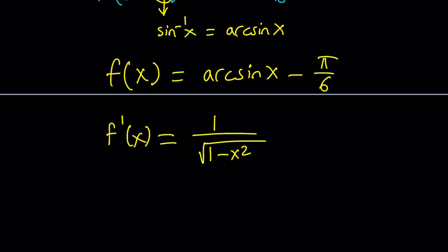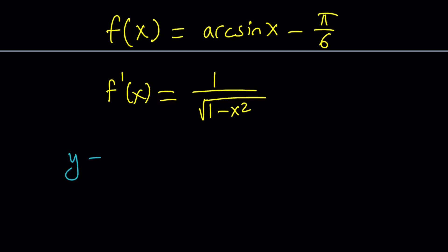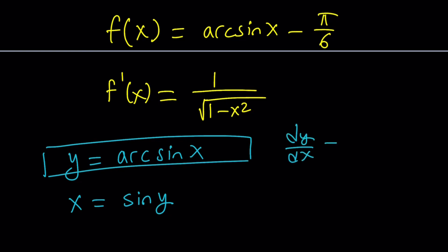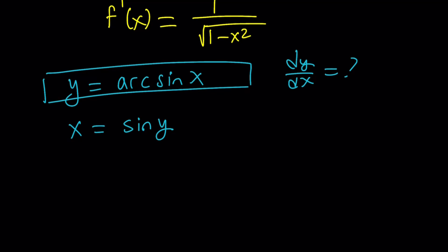If you don't know how to differentiate it, you can look at the following. Suppose y equals arc sine x, which means x equals sine y. So suppose you don't know how to differentiate this. In other words, we are trying to find dy over dx, but we don't know what it is. Let's differentiate both sides here. But instead of differentiating x with respect to x, because that will be 1, we can differentiate both sides with respect to y, because x is a function of y.